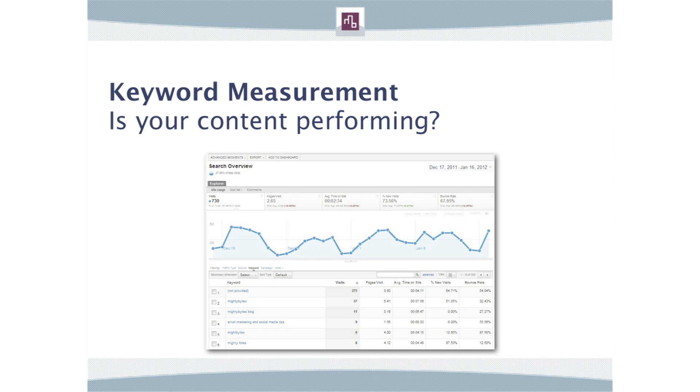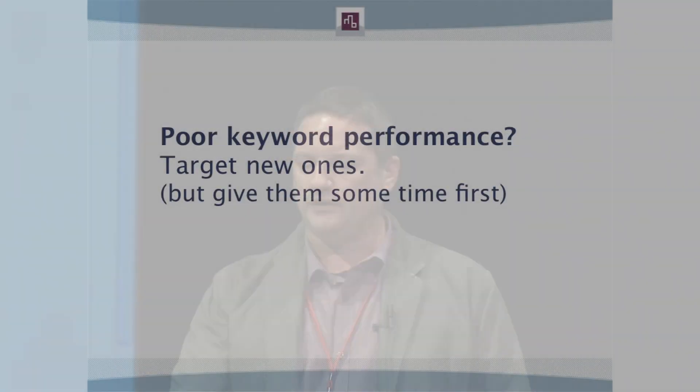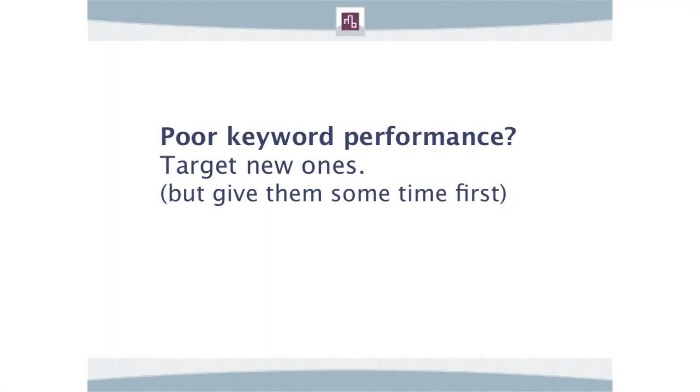Then we generate keyword reports — typically once a month, both internally for Mighty Bytes and for our clients. We analyze them and cross-reference with the previous month's report to see how these keywords are performing, whether they're driving traffic and how long those visitors are staying on the site. We sit down and say, these are our recommendations for improving this. If a keyword isn't working, we start targeting new ones from the list we created at the beginning. We go back into the content, move it around, put new targeted keywords in, and then the next month we ask: is this performing better, worse, or neither?